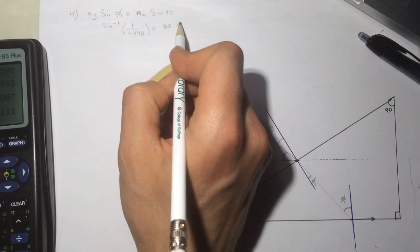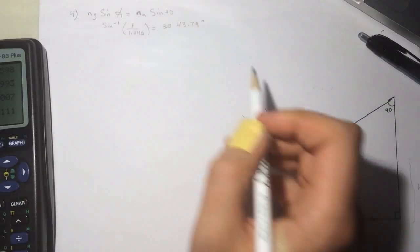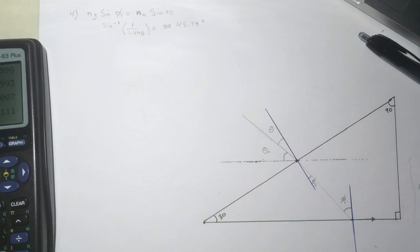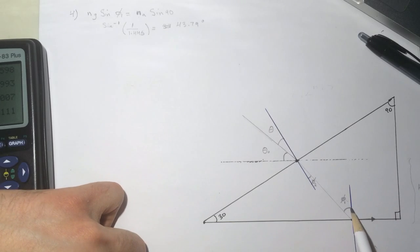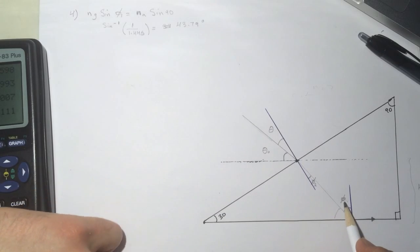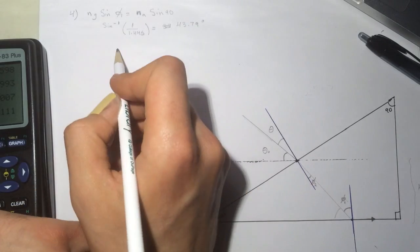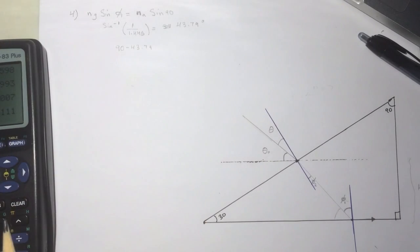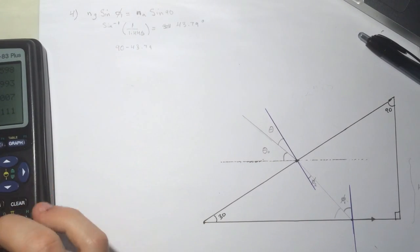Let's do some trigonometry now. We have this guy here, and let's find this guy here which is 90 minus this guy, the other guy. So it's 90 minus 43.79. I got 46.2.